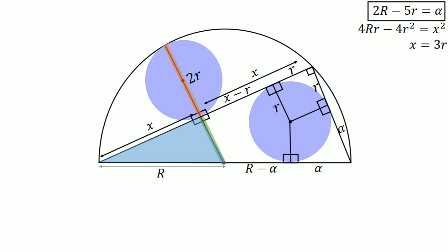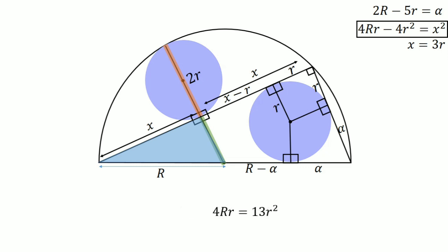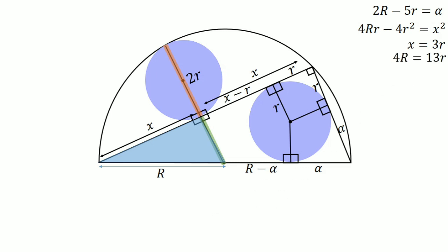Using the equation 4R·r minus 4r squared equals x squared, and putting x equals 3r, we get 4R·r equals 13r squared. Dividing both sides by r, we have 4R equals 13r. Writing this in the corner.